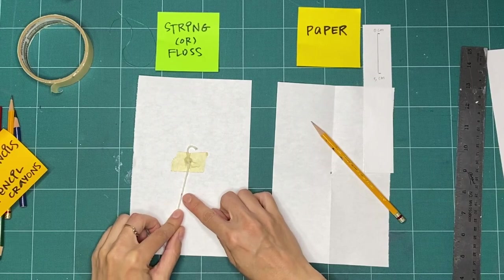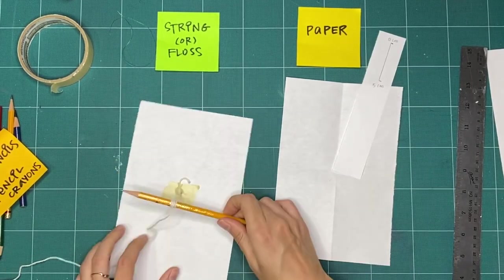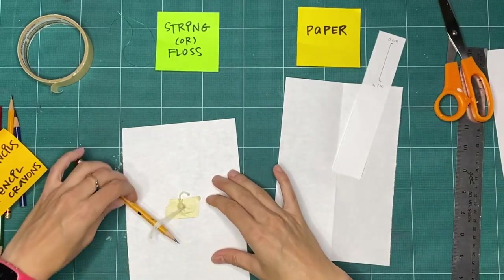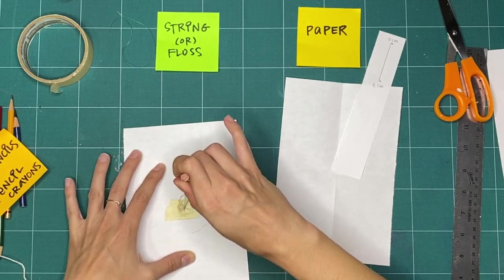Now take your second pencil and tie it to the other end of the string. Try to line the pencil up to the other mark you made, but if you go over or under, that's okay. Now, make a circle.